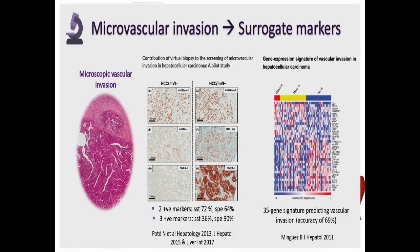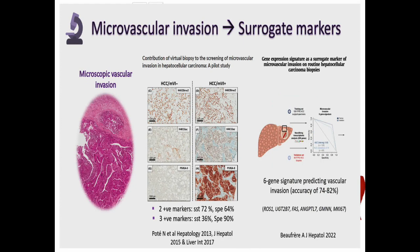Using transcriptomic analysis, several research groups identified different gene signatures. One including 35 genes was able to predict vascular invasion with an overall accuracy of 69%. More recently, in my group, we identified gene signatures including only six genes that were able to predict vascular invasion with an accuracy of 64% to 82% in biopsy specimens. So we can do that.